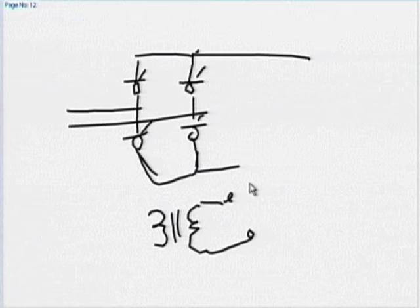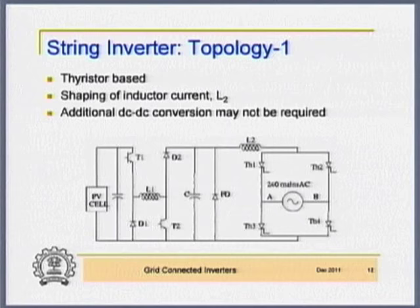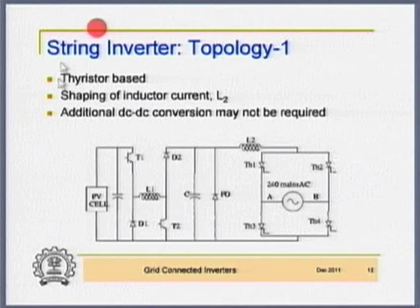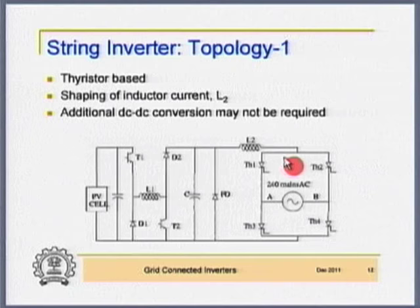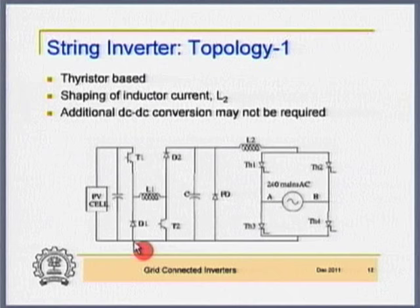In other words, the SCR is an almost ideal switch except that it does not have turn-off capability. If there is a grid available in a single-phase case, I can have a very simple inverter. The moment I use an SCR, it is one of the most reliable switches. This is the power circuit — I have a solar panel, and this is a buck-boost converter. The conventional buck-boost converter output voltage gets inverted — output voltage is negative with respect to the reference point.